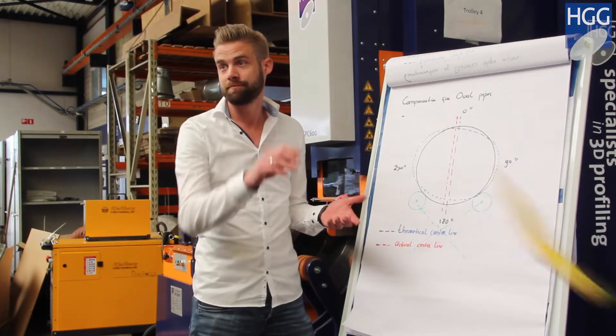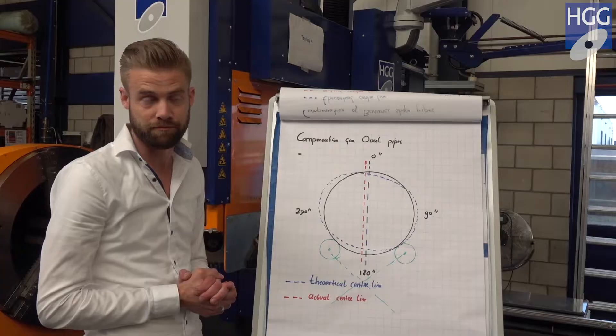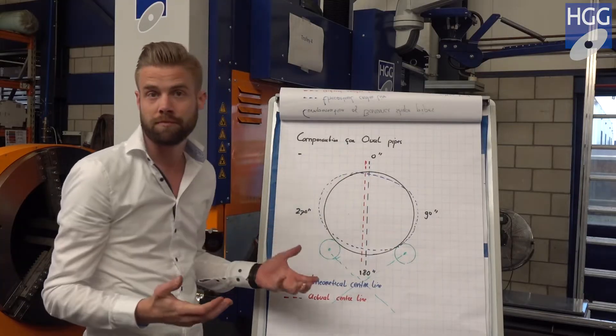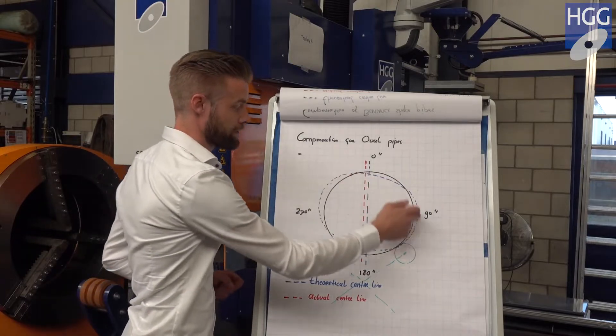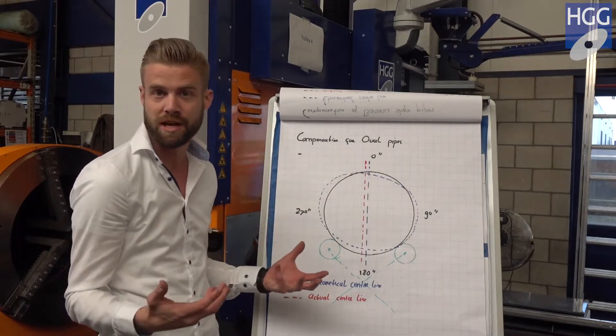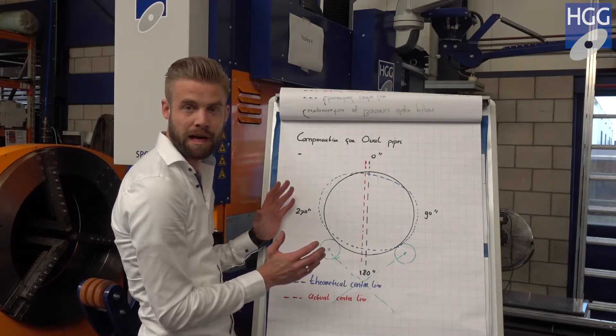But we have another problem. That problem is oval shaped pipes. What we see over here, the black circle, that is how we would like to have it. However, reality is the blue circle, an oval shaped egg shaped pipe. We cannot avoid that from happening.